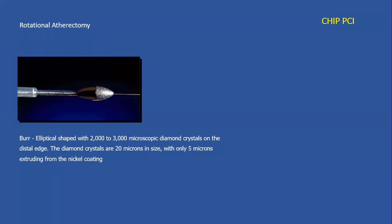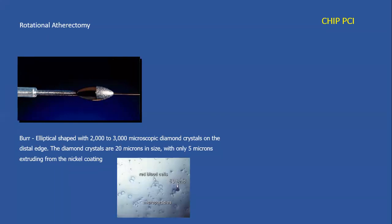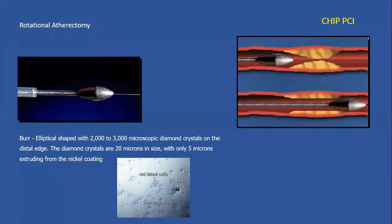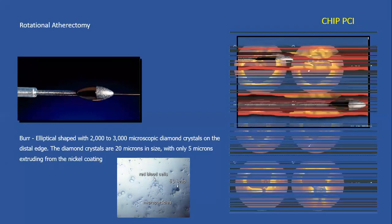So what is the burr? It's an elliptical sphere with diamonds on it. The best description for patients: it's a diamond bullet — both female and male patients like it because girls like diamonds and boys like bullets. It creates small particles about five microns in size, smaller than red blood cells, which pass through the heart and are subsequently excreted from the body. This schematic demonstrates how it works, focusing on debulking, but multiple cracks in the calcium also occur.